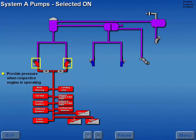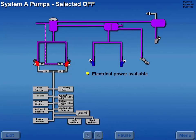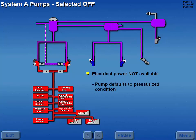The System A pumps provide pressure whenever the pumps are selected on and the respective engine is operating. With the electrical system powered, if an A pump is selected off, it continues to run in a depressurized condition, which bypasses fluid to the reservoir without damage to the pump. If electrical power is not available, the System A pumps default to the pressurized condition.